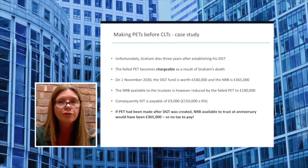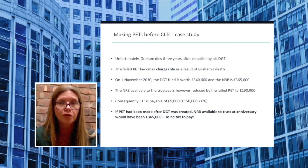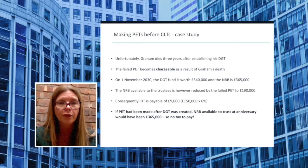However, look at what happens when the trust reaches its 10th anniversary on the 1st of November 2030. The discounted gift trust fund is now worth £340,000 and the nil rate band has gone up in value to £365,000. Remember that this is just the starting point for calculating the nil rate band available to the trustees. The actual amount of nil rate band available to the trustees for calculating the periodic charge must take into account the cumulative total of chargeable transfers made by the settlor in the seven years before he created the trust.